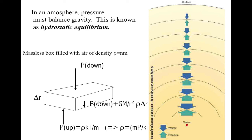Let's consider a massless box filled with air of density ρ. So ρ is the number of particles times the mass of each particle. And let's consider the forces on that box. So on the left, you see a diagram of the box.